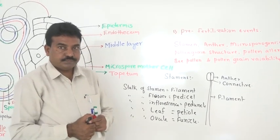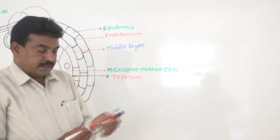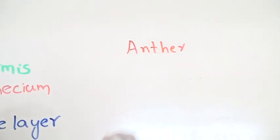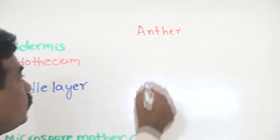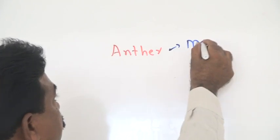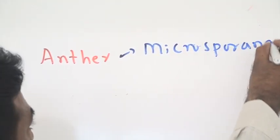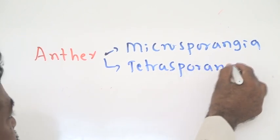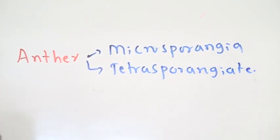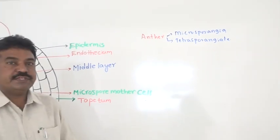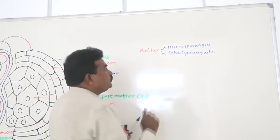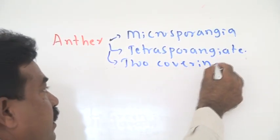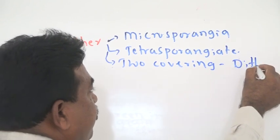If you take a cross-section of the anther, the anther has totally four circular structures. These circular structures are called microsporangia. This condition is called tetrasporangiate, meaning the anther has totally four microsporangia — tetra referring to four. These circular structures are covered by two coverings, hence the anther is dithecous — di means two, theca refers to covering or coating.